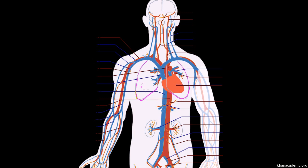When blood travels away from the heart it's deoxygenated — shown in blue. This blue blood traveling away from the heart represents the pulmonary arteries. They keep splitting into arterioles and eventually capillaries — super small tubes — that run right past the alveoli. Then they become oxygenated. Now we're talking about blood going back to the heart, so we're talking about pulmonary veins. These capillaries pick up oxygen, and now we're going back to the heart, entering on this side.